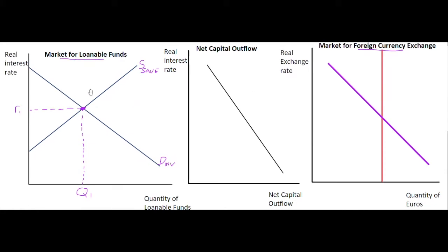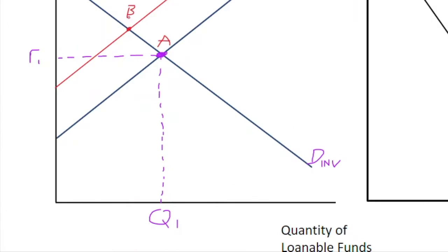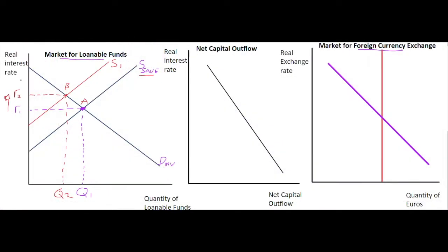Because of the government deficit, the supply of loanable funds — which includes both household and government savings — reduces. The government is spending more than it takes in through tax, reducing national saving. Savings fall from S to S1 and equilibrium moves from A to point B. The impact is that the real interest rate, the real cost of borrowing, increases from R1 up to R2.